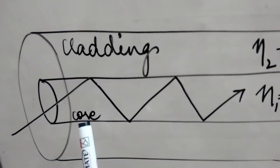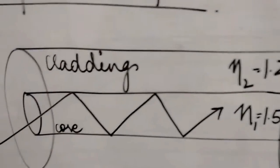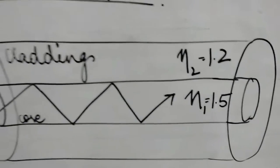The core is here and its refractive index is 1.5, while the cladding has the refractive index 1.2 that is lesser than the core.